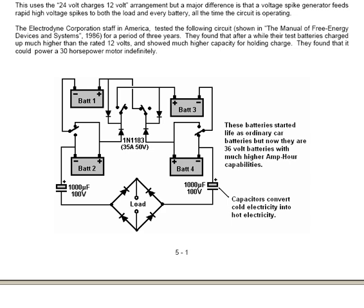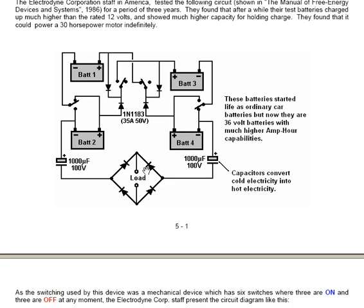But when you look at this circuit, which has only got four batteries, four diodes, two capacitors, and a diode bridge, it's not nearly as straightforward and simple as it appears to be. The batteries started out life as ordinary car batteries, but now they're 36-volt batteries with much higher amp-hour capabilities. Capacitors convert cold electricity into hot electricity, so hot electricity is fed through the diode bridge to the load.